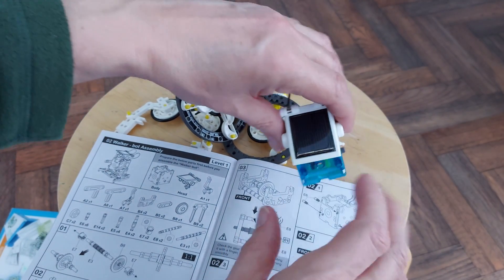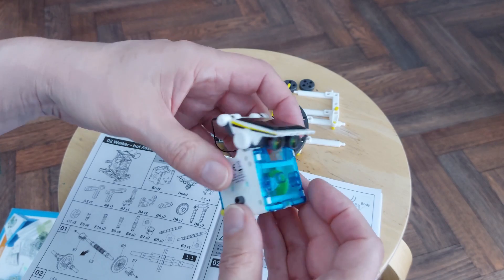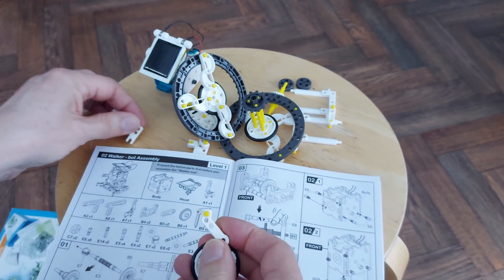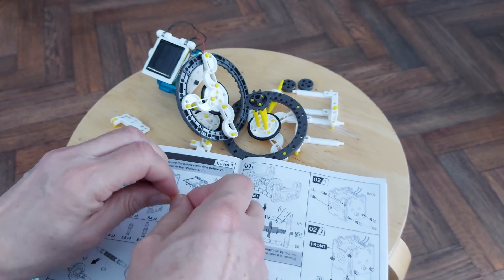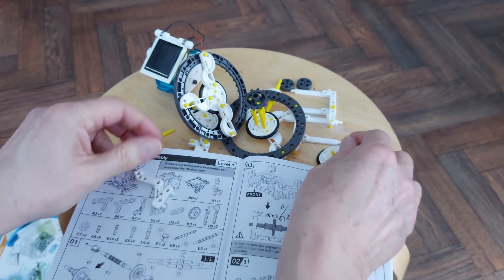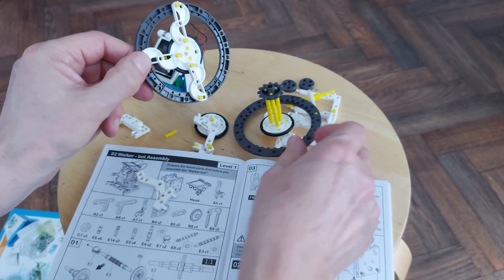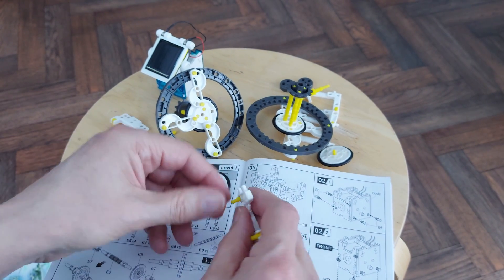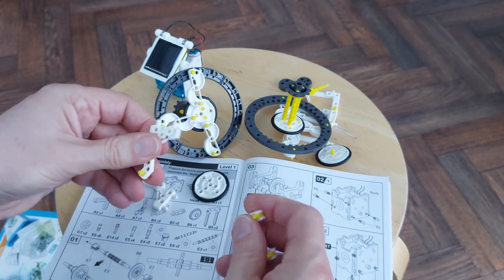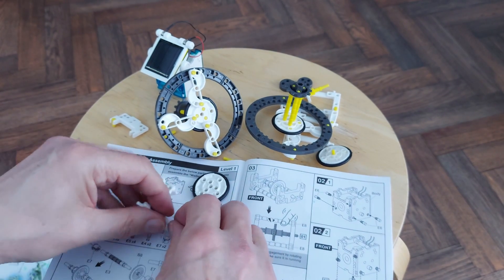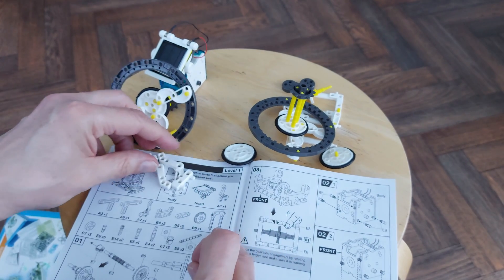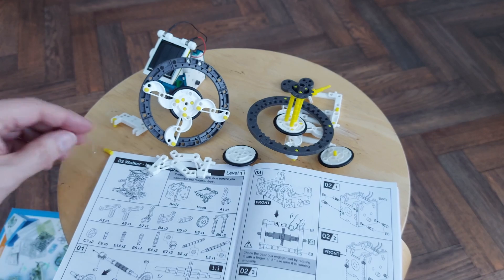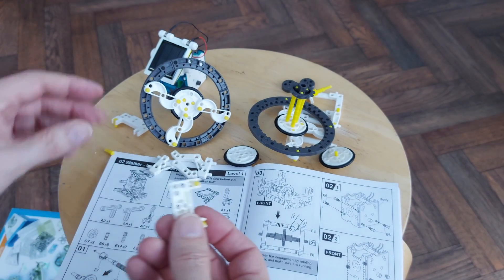Page 19. We do need the head and the body, and we need A1, which is either that one or the one that's on the other side there. Okay. We also need A7, which is the other one. We need these bits.